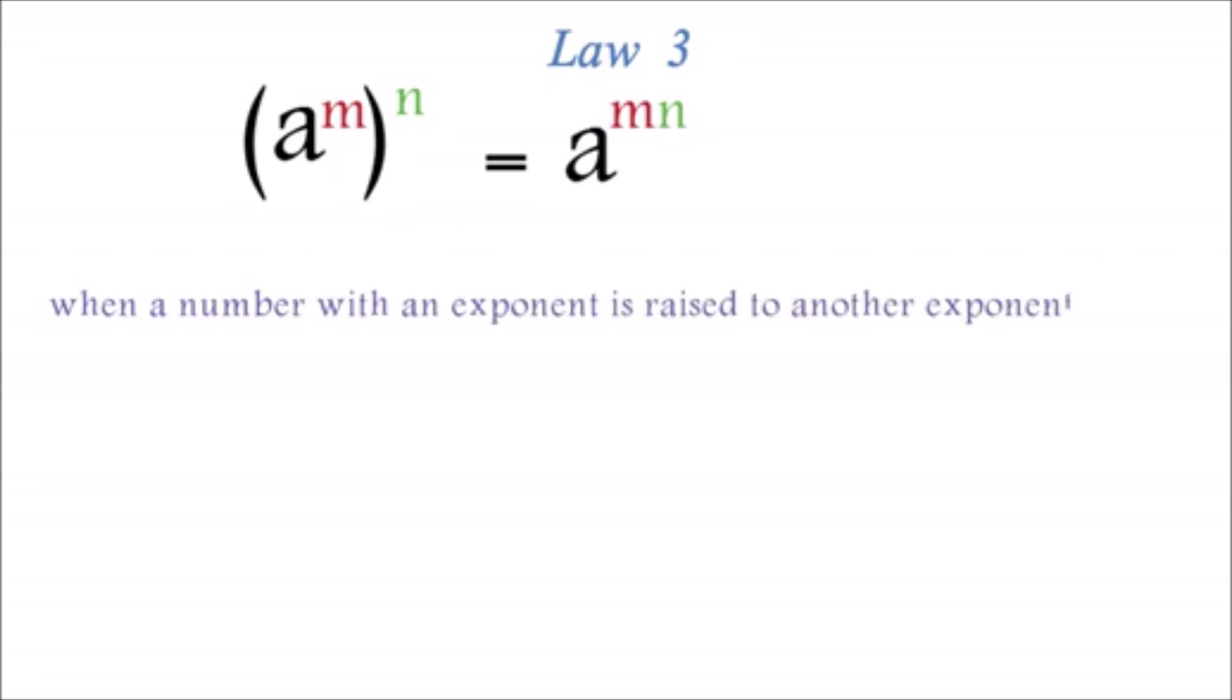Law 3: The third law of exponents states that into parentheses a exponent m all exponent n equals a exponent mn. We are saying that when a number with an exponent is raised to another exponent, we can simply multiply the exponents.